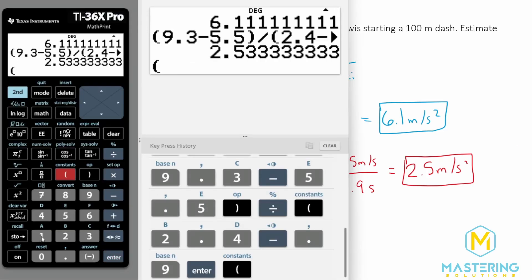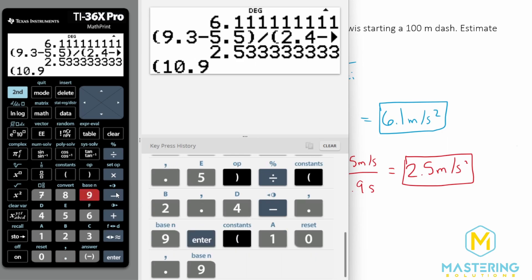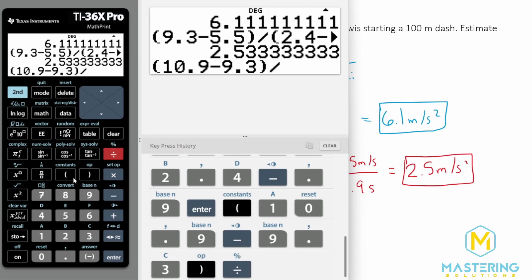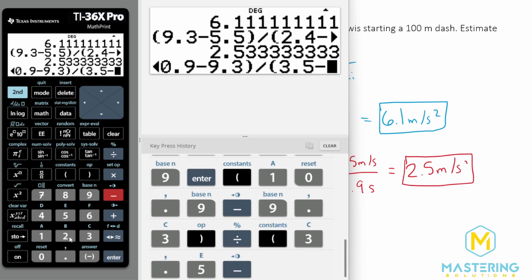Okay, so 10.9 minus 9.3 divided by 3.5 minus 2.4.